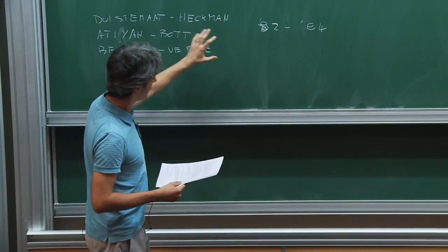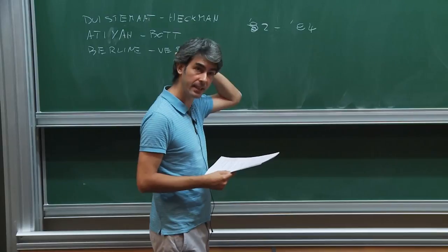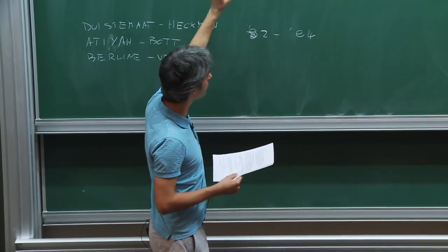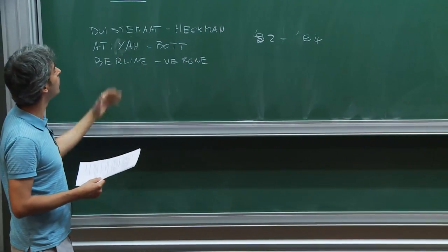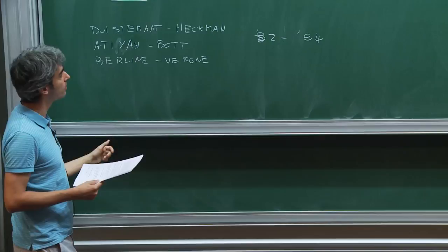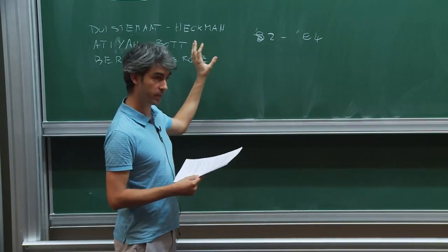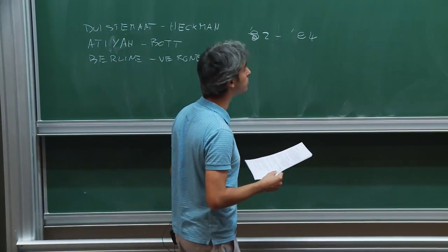Supersymmetric localization is somehow an infinite dimensional version of these localization theorems. I think it would be a good thing, since we have a lot of time, to start by briefly discussing these important results — at least sketch how they are obtained. This will be useful because you will see all the main ideas that will appear in the more complicated setup of quantum field theory.